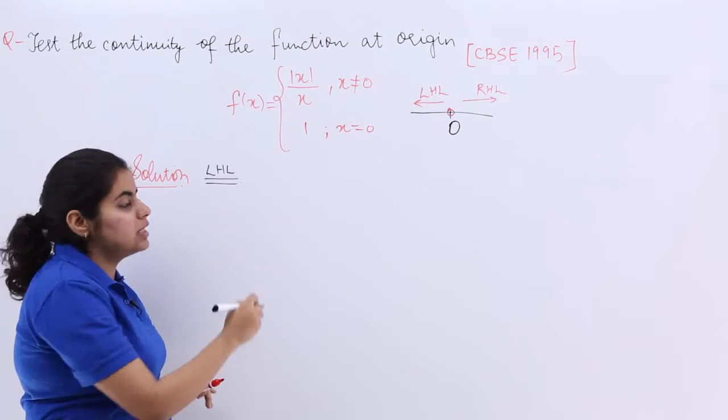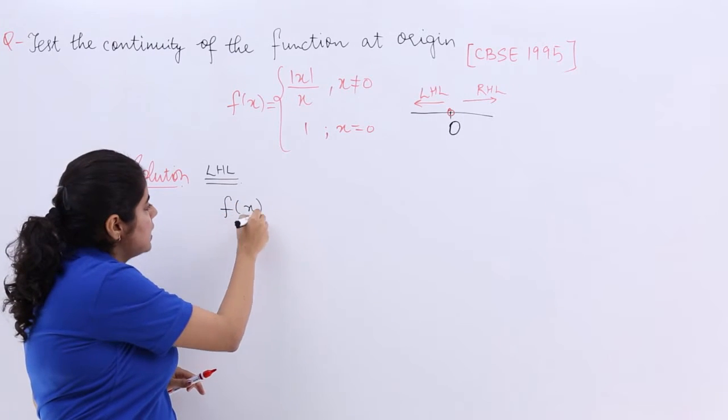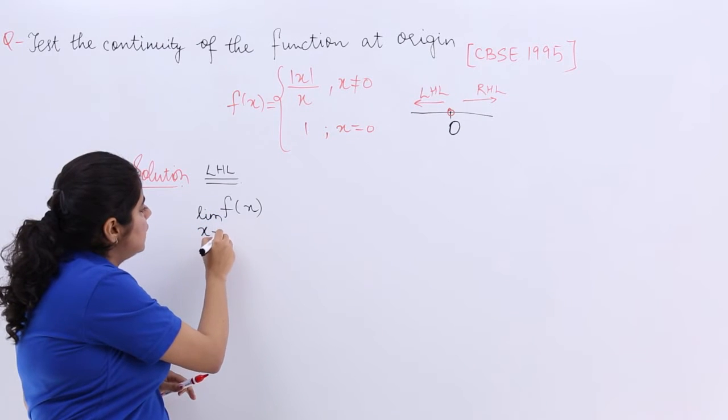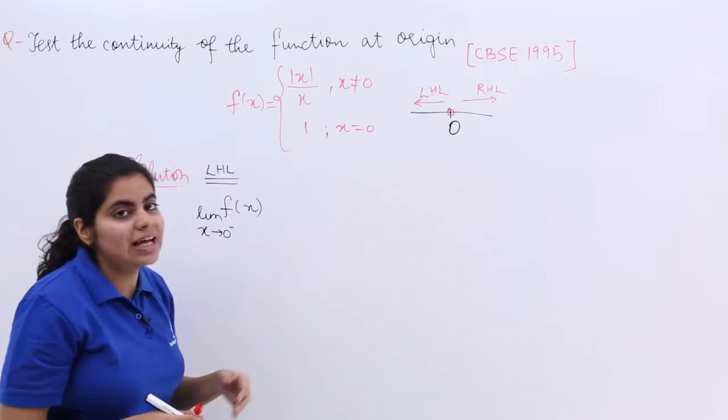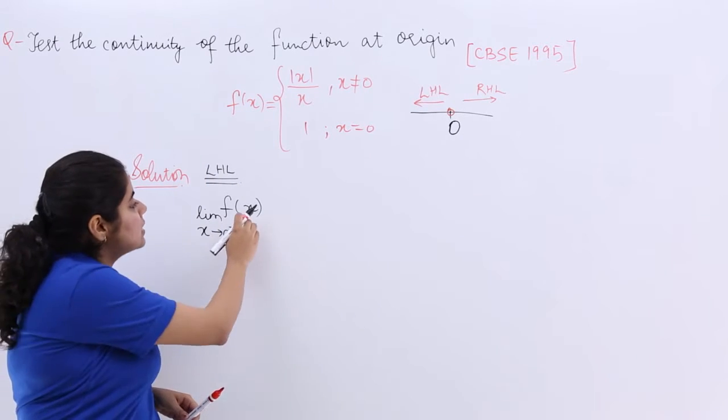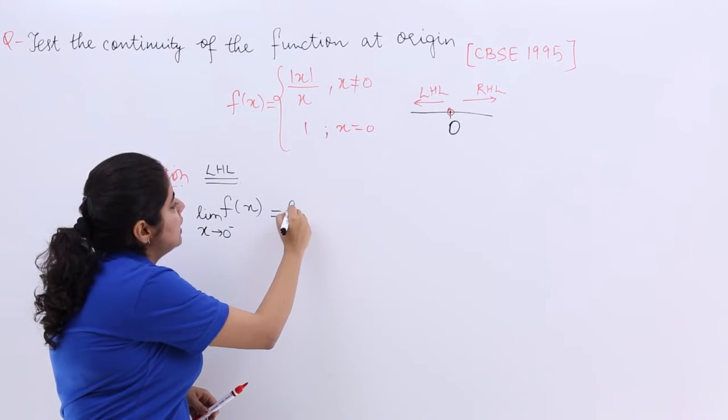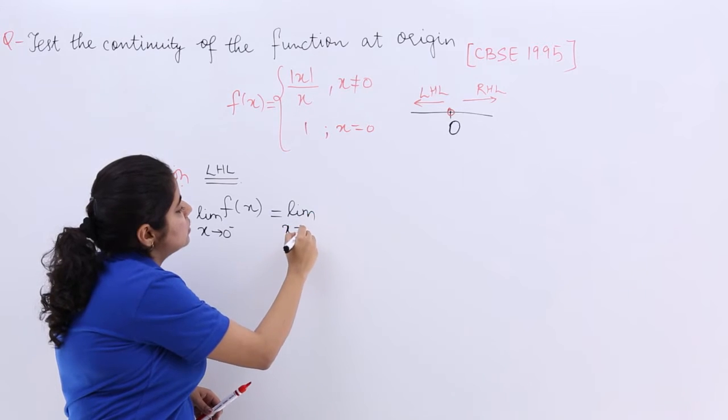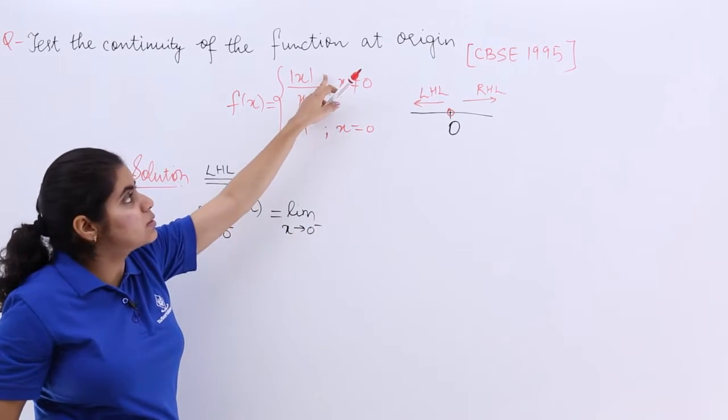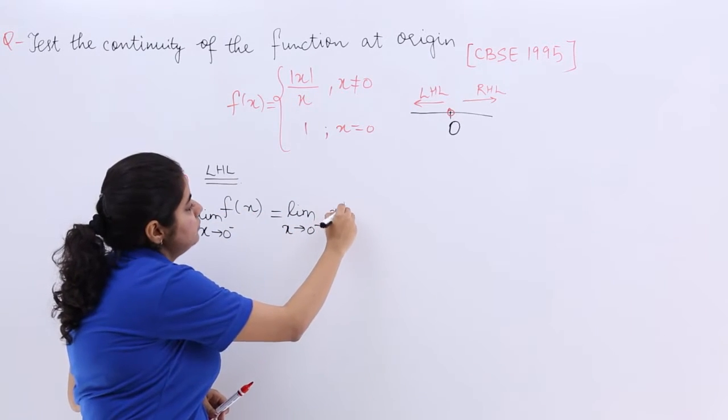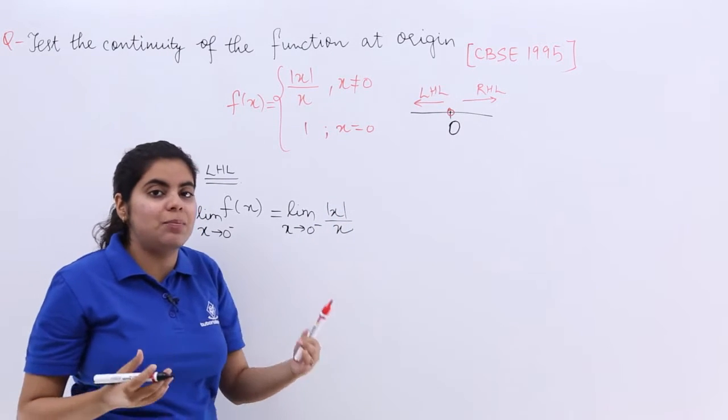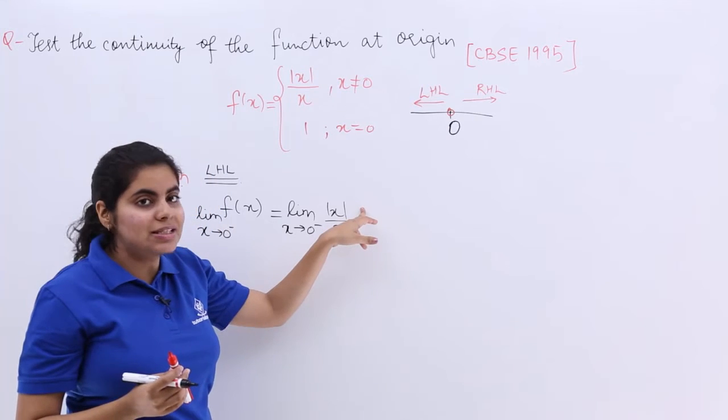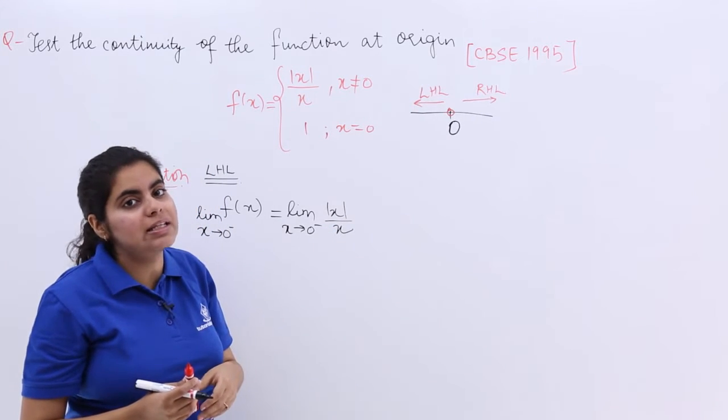Left hand limit means we are talking about f(x) and limit x tends to 0 minus means somewhere less than 0. Now what is the value of f(x)? Let's put it, it is limit x tends to 0 minus, f(x) is |x|/x. When you are going to put x tends to 0 minus, you will be substituting x by 0 minus h.